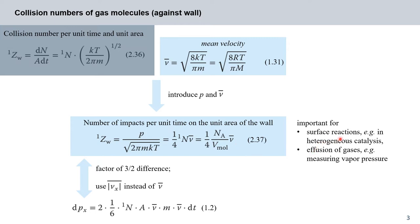This relationship is of great importance in calculating surface reactions — for example in heterogeneous catalysis — and for the treatment of effusion of gases. In the latter case, the effusion velocity, meaning the particle flow exiting through an opening of a Knudsen cell as seen previously, is of interest. This particle flow of escaping particles can be calculated directly from equation 2.37, because it is essentially identical with the number of particles hitting area A of the opening in any given unit of time.